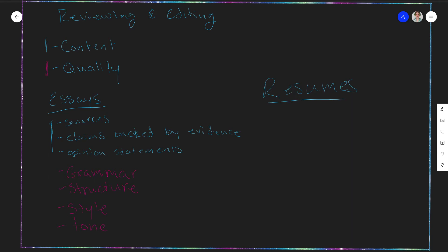When talking about resumes, for content you're going to look at whether they have all the things they need. Do they have work experience? Do they have any school groups they're part of? If you hold a position in Cyber Eagles, for example, that's a really good thing to put on your resume. You can put TA positions on there as well. You can add volunteer experience and certificates if you have any — just as much of that information as you can.